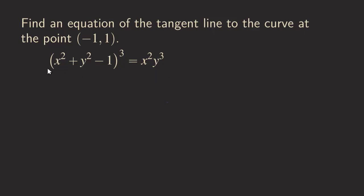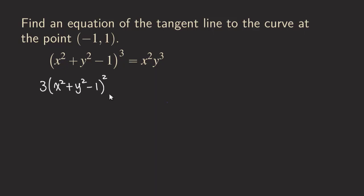First we are going to differentiate the left side using the power rule — bring the 3 to the front, subtract 1 from the exponent, and then multiply by the derivative of the inside. So we bring the 3 down and get (x² + y² - 1) squared. But that's not done for the left-hand side because we also need to multiply by the derivative inside due to the chain rule.